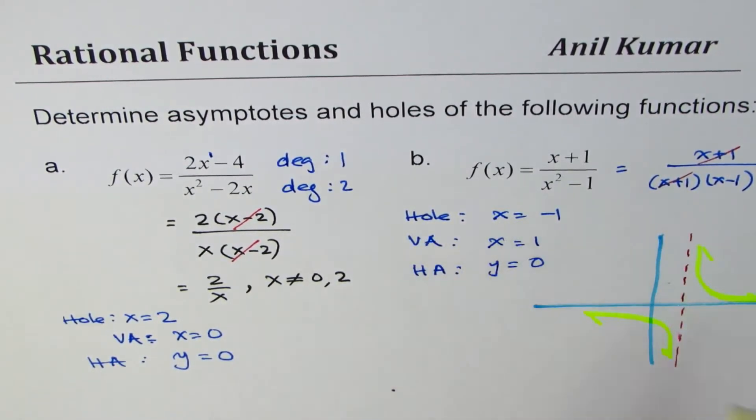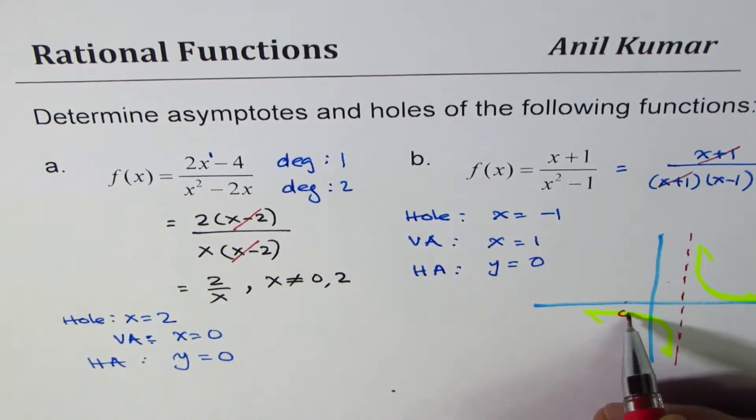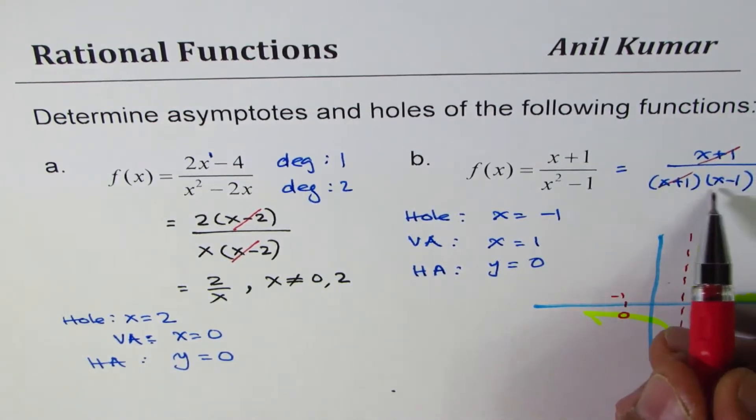Now there's a hole at x equals minus 1. So at x equals minus 1 there's a hole. The value of this hole we can figure out.